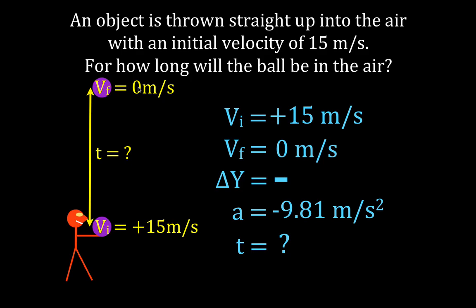In the second case, we can think of the problem using the full trip. When the object comes back down to the same place from which it was projected, it's going to have the same speed — 15 meters per second — but traveling in the opposite direction. So it'll have a negative velocity: -15 meters per second. When we launch it, it's positive; when it comes back down, it's negative. The speed is the same, and the time up equals the time down. So in the second case, the final velocity is -15 meters per second.